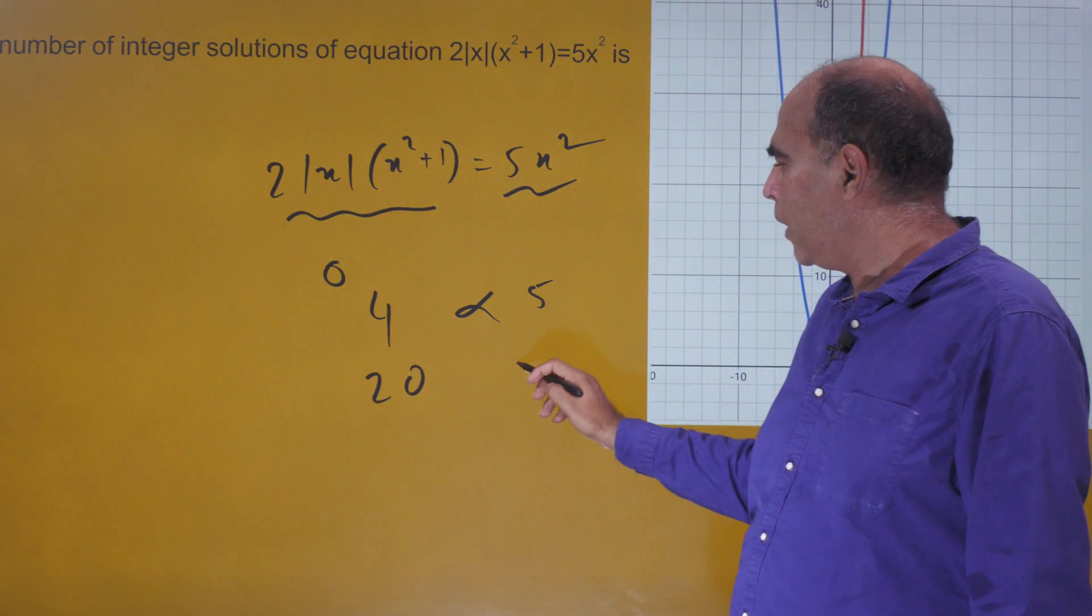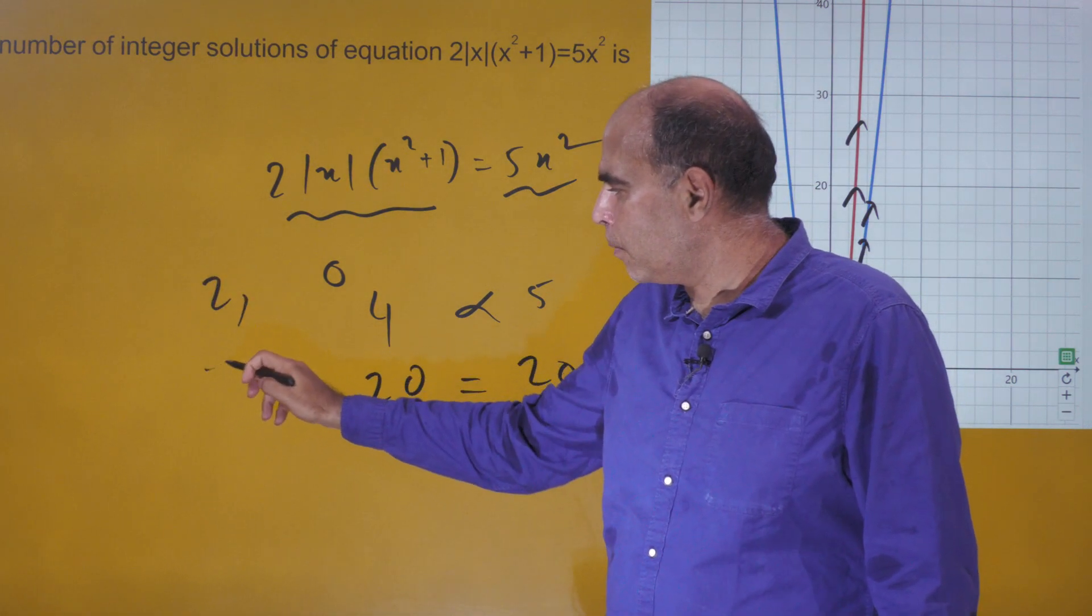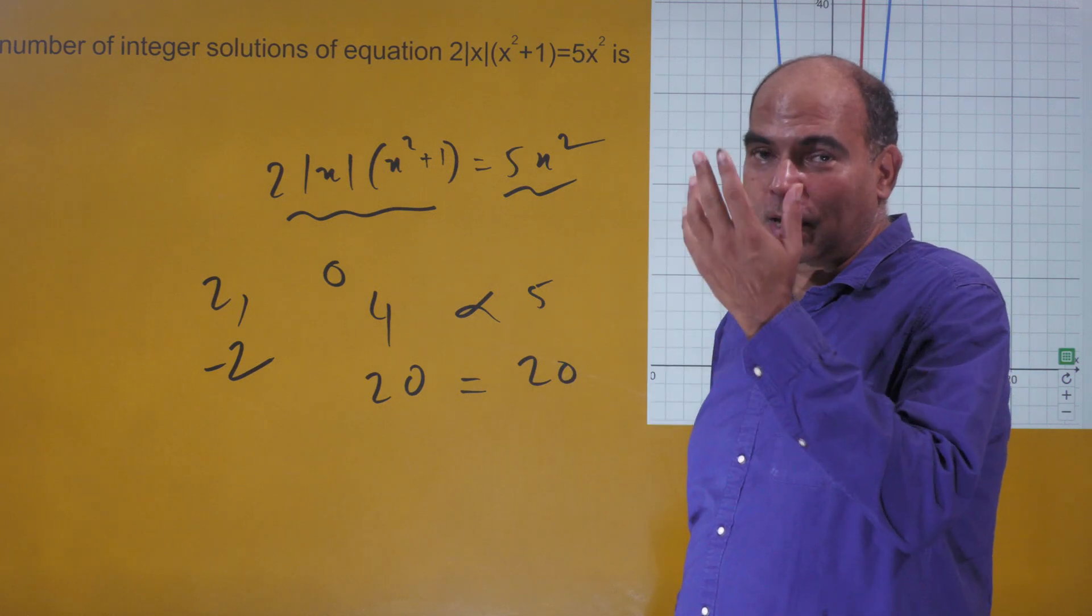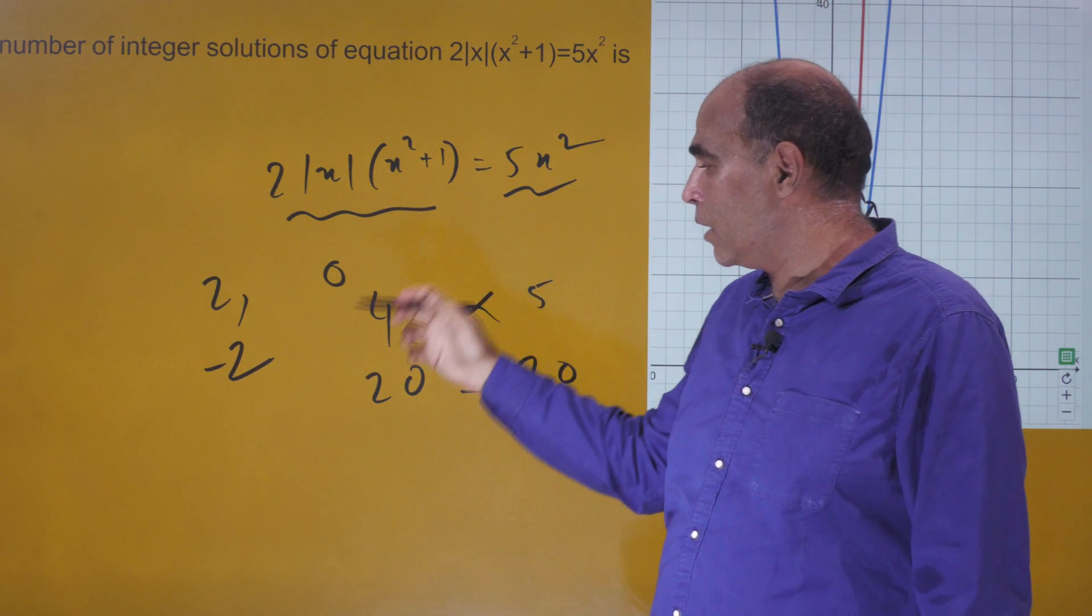Minus 2 will automatically be a solution. And after that, as you start going higher on x, you'll keep getting larger values on the left-hand side and smaller values on the right-hand side. Hence there are no more integer solutions, and the correct answer is three.